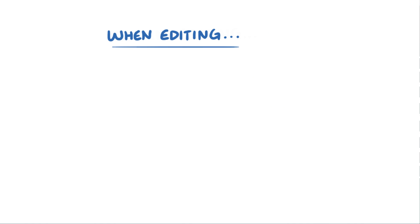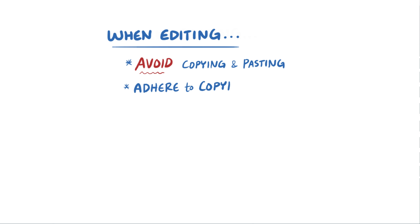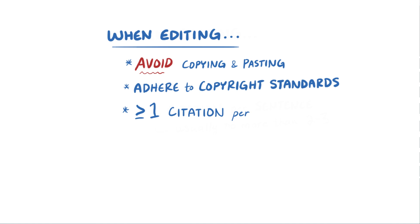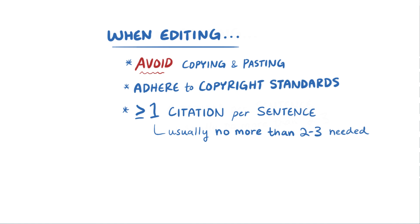When editing Wikipedia, it's important to avoid copying and pasting from sources and to adhere to copyright standards, especially since your work will likely be viewed by a lot of people. It's best practice to have at least one citation for every sentence you write, while typically more than two or three is not required.